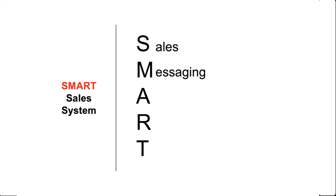The R in SMART stands for Response — how you respond to the prospect. It's one thing to plan what you're going to say, but you never really know how the prospect will respond. Being prepared for objections is the other half of sales messaging. You'll face objections like 'I'm not available,' 'I'm not interested,' or 'just send me your information.' Are you improvising, or are you prepared with a response that keeps the conversation going?